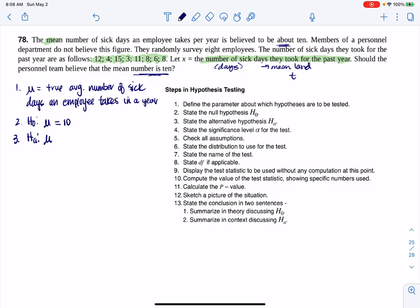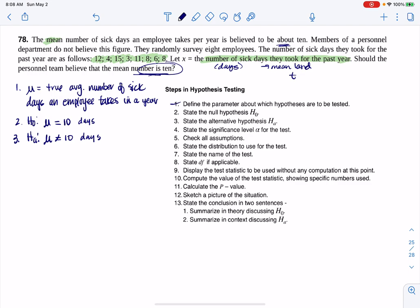Steps two and three always go together - the null and the alternate. We'll make sure we have a colon after each of them. Whatever parameter you define in step one, in this case mu, should show up in steps two and three. The claim is 10, so on average 10 days. They're saying, does the personnel team believe this number is 10? They're not slanting us one way or the other, not saying should the personnel team believe it's greater than 10 or less than 10. So the alternate is going to be a two-sided alternate. We have 10 days in the null and then just different from 10 days in the alternate. For my alpha, there wasn't one stated, so I'm going to default to 5% alpha.